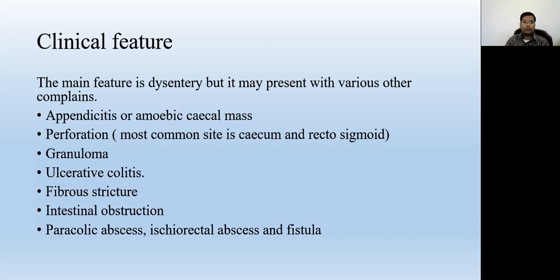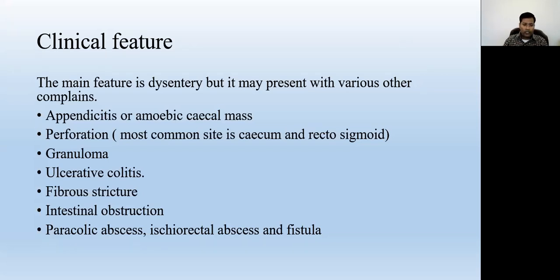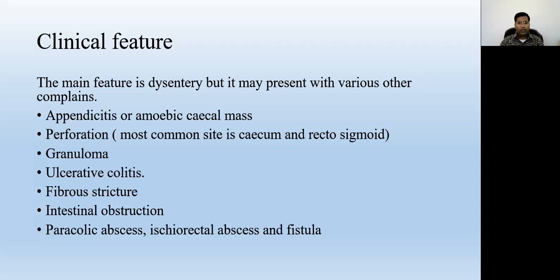Fibrous strictures can form in later stages when the ulcers heal, because the deep ulcers involve the muscle layer, creating stricture formations in the wall of the intestine, narrowing the lumen, which may cause subacute or acute intestinal obstruction. In some conditions, other infections associated with Entamoeba histolytica may create abscesses, presenting as paracolic abscess, anorectal abscess, or anorectal fistula.